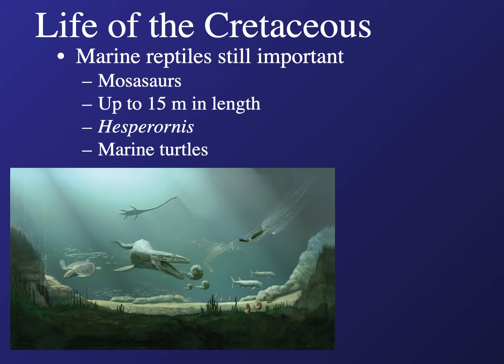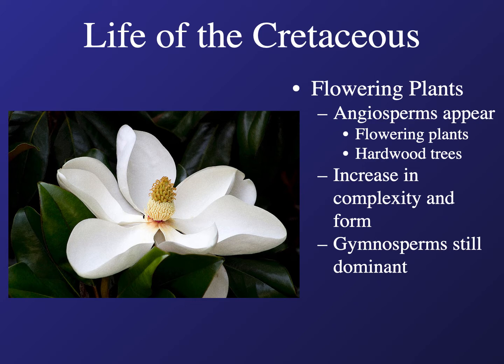Life on land saw the evolution of a brand new group of creatures that would prove absolutely essential for all later life on our planet — the flowering plants. Flowering plants are known as angiosperms and include most hardwood trees, grass, and pretty much every plant you might find outside. Gymnosperms like pine trees and ginkgos were still dominant during the Cretaceous, but flowering plants had finally arrived and would change the landscape forever — totally more complex than their gymnosperm relatives.